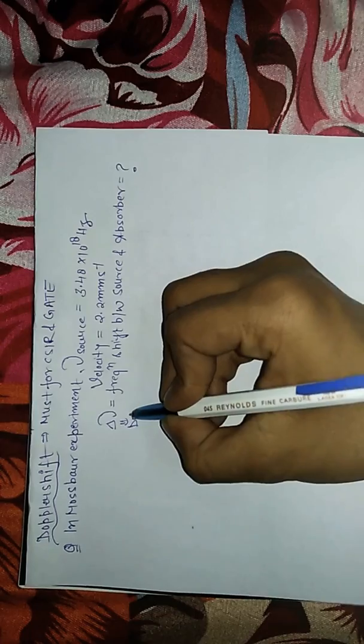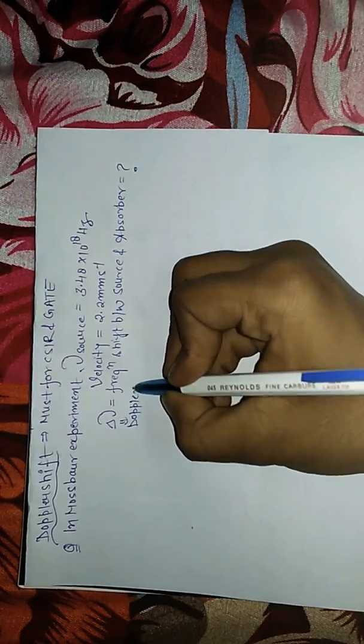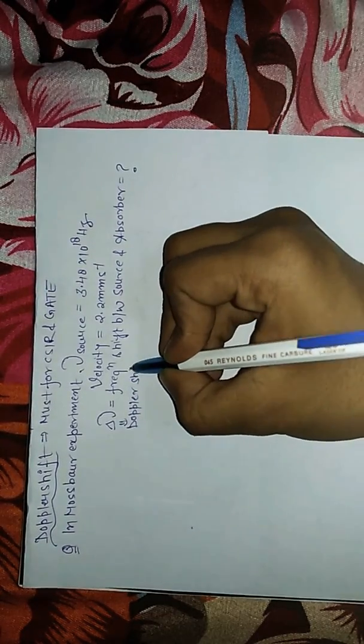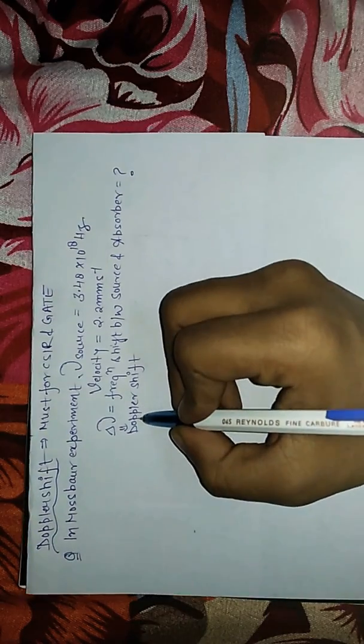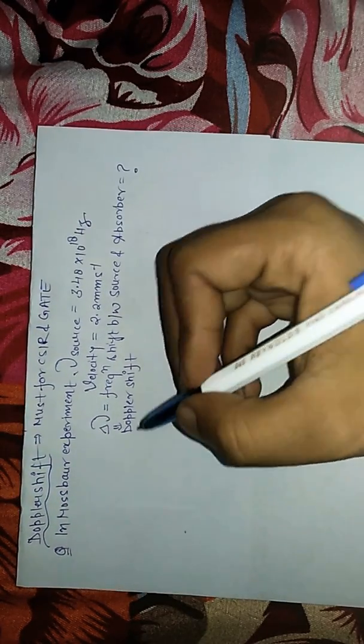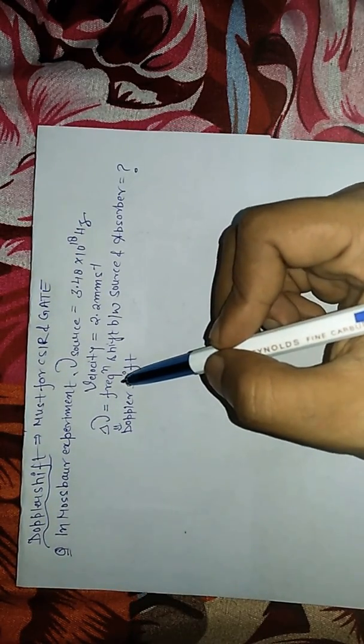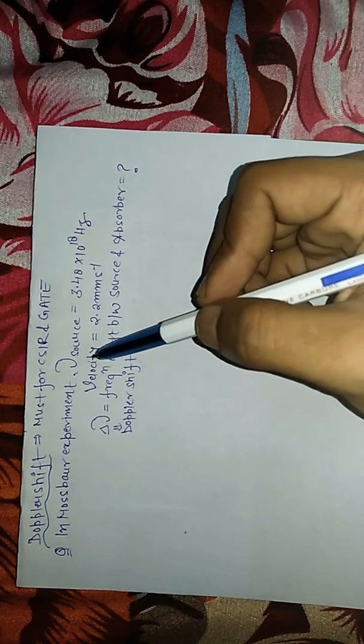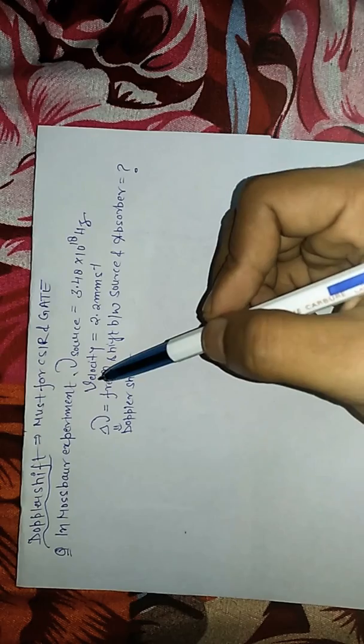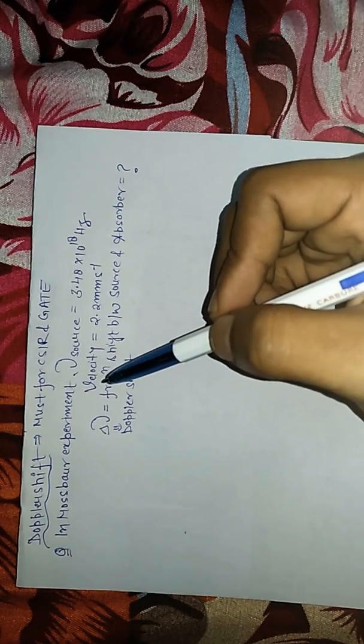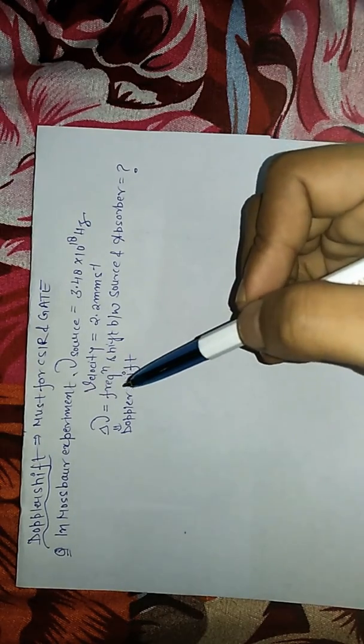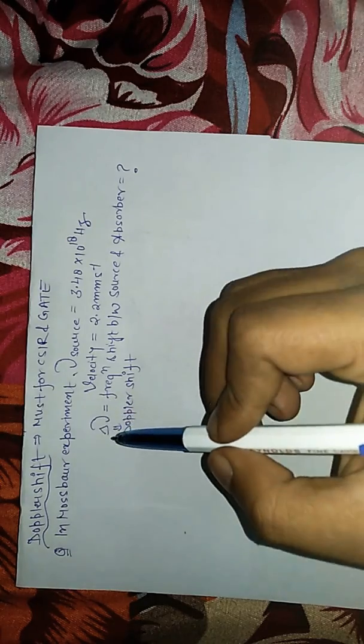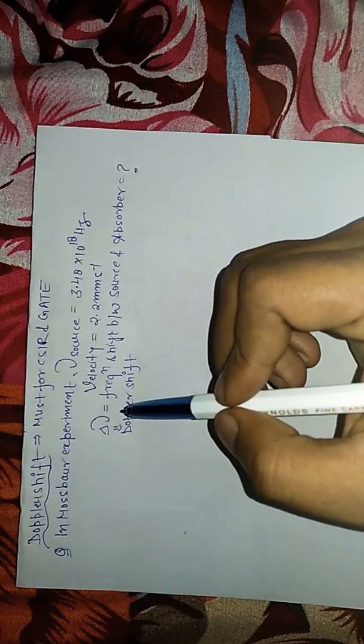In Doppler shift, in this phenomena, we take a moving source that is cobalt-57 in order to minimize the recoil loss. So in this question we have to do just calculations.